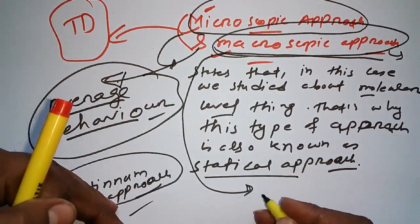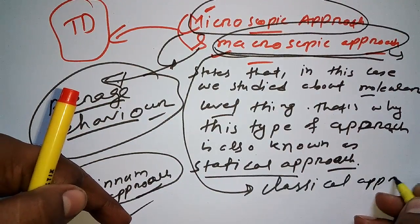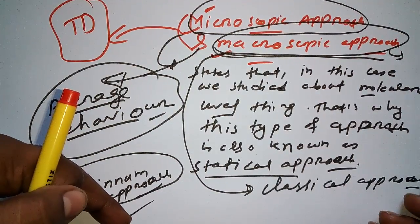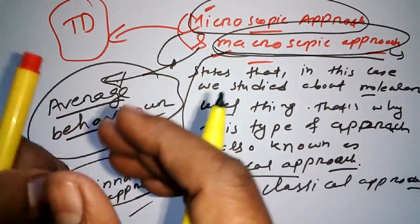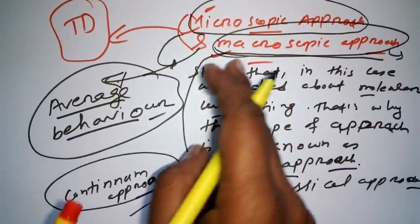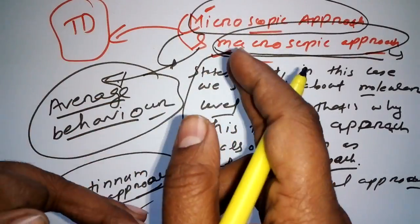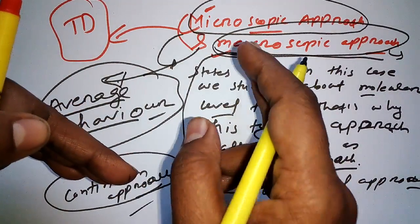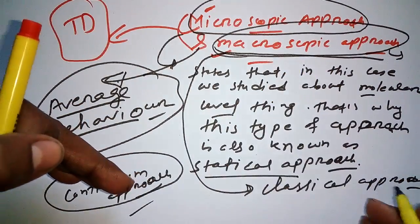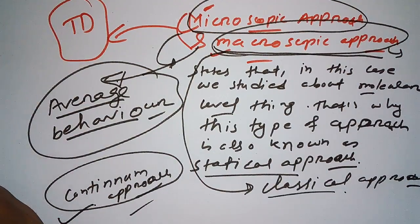Another thing to share: there is another name for macroscopic approach, and that is known as the classical approach. To connect everything — microscopic deals with molecular-level and statistical things; macroscopic deals with average behavior. In thermodynamics we study the macroscopic approach, also called the classical approach. In my next video I will cover the continuum approach.